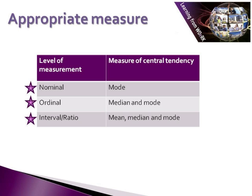Above ordinal data in the hierarchy is interval or ratio data, commonly called scale data. In addition to being ranked, the distance between each value can also be measured — for example, the difference between 1.5 metres and 1.6 metres. Therefore interval and ratio data can use the mode and the median, and also the mean, since the mean requires actual mathematical values to calculate an average.